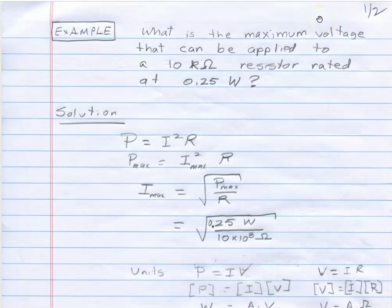And the question is what's the maximum voltage that can be applied to a 10 kiloohm resistor that's rated at a quarter of a watt.